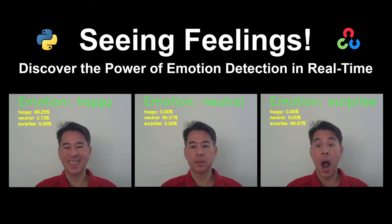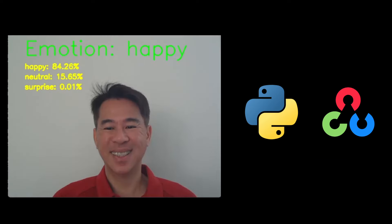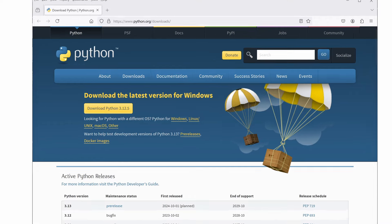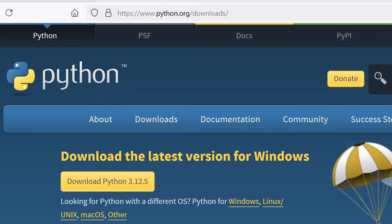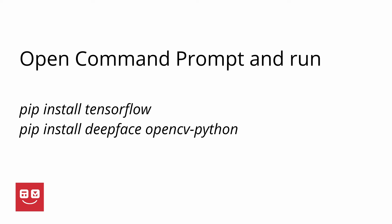In this video, I'll show you how to install and run a Python script to detect emotions. First, download and install Python. Open your command prompt or terminal and run the following commands.